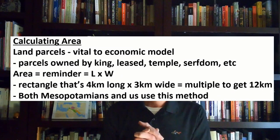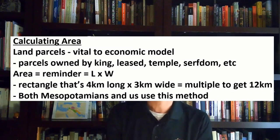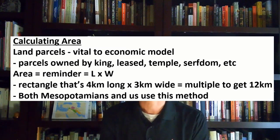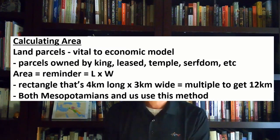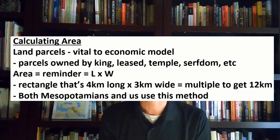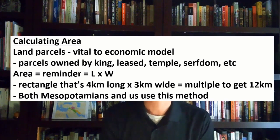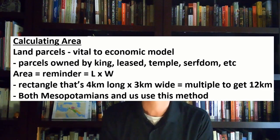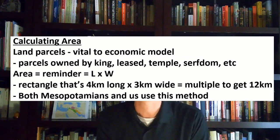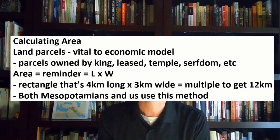Let's talk about calculating area. They were dealing with land parcels mostly when they're calculating this area. Parcels were owned by the king, leased by the king, owned by the temple. You had systems of serfdom, businessmen, big landowners, plantations. Parceling out land for all these various different categories was very important. Determining the space was vital to their business model. They calculated area just like we did, length times width.